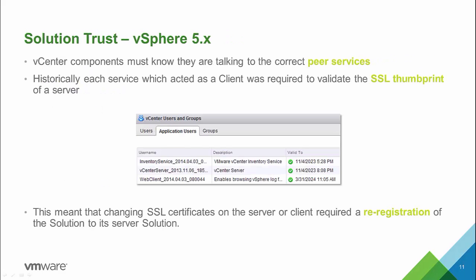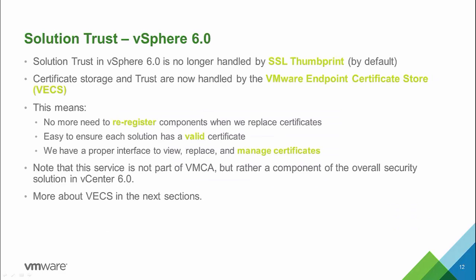Trusts between the different vCenter Server components were in the past handled by comparing the SSL thumbprint to the one received on the connection. This required a re-registration every time you changed certificates for the services. Starting with vCenter 6.0, we have moved away from SSL thumbprint verification by default, moving this over to the VMware Endpoint Certificate Store, which handles certificate storage and trust relationships. This means we are no longer required to re-register components when replacing certificates.